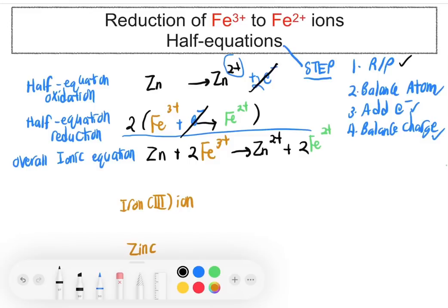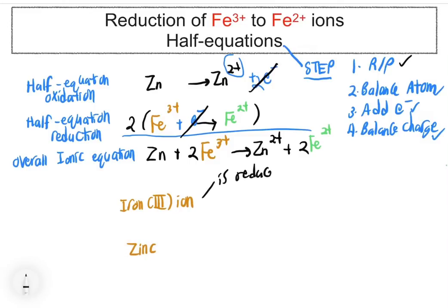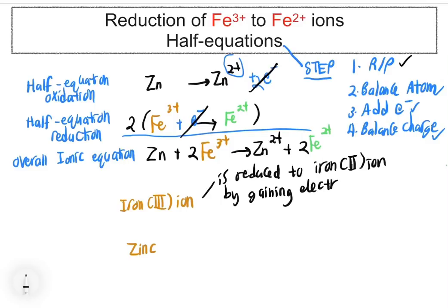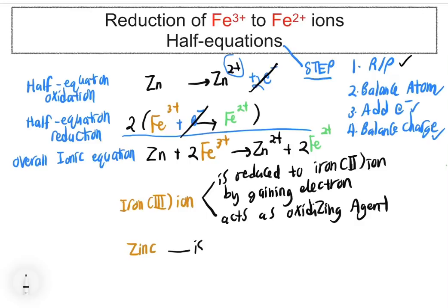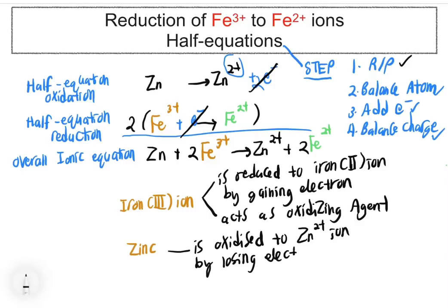In summary, Fe3+ ion is reduced to Fe2+ ion by gaining electrons, so Fe3+ acts as the oxidizing agent. Meanwhile, zinc is oxidized to Zn2+ ion by losing electrons, so zinc acts as the reducing agent.